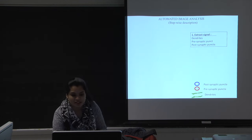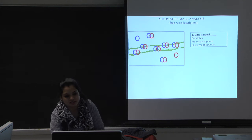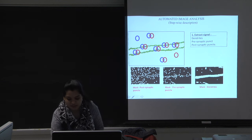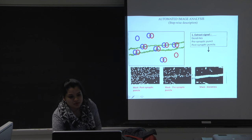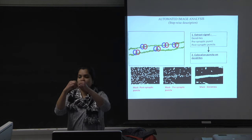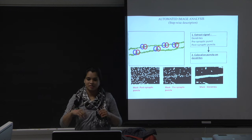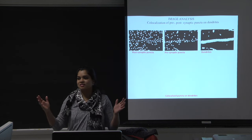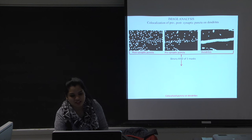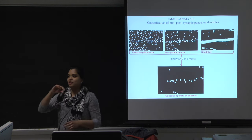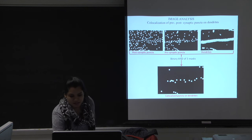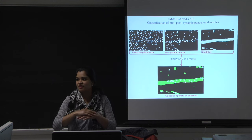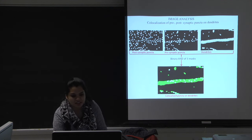Step one is accomplished — I have extracted my signal. Step two: I only want to co-localize those pre- and post-synaptic terminals lying on top of the dendrite. That was quite easy: I have three binary masks, and I performed a binary AND of these three masks to give me an idea of the synapses lying on the dendrites. Here I'm showing the synapses identified from this step, superimposed on the dendrites.